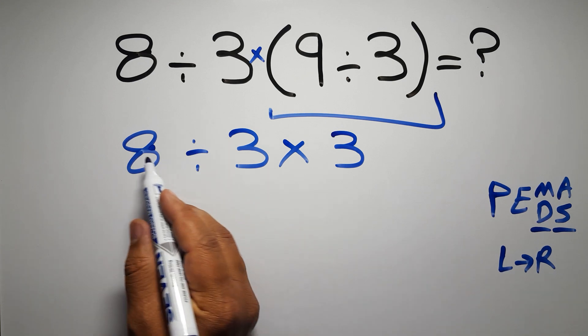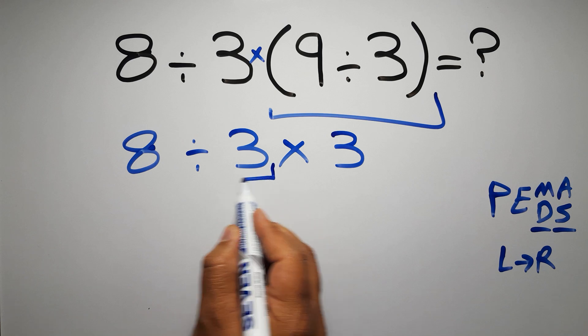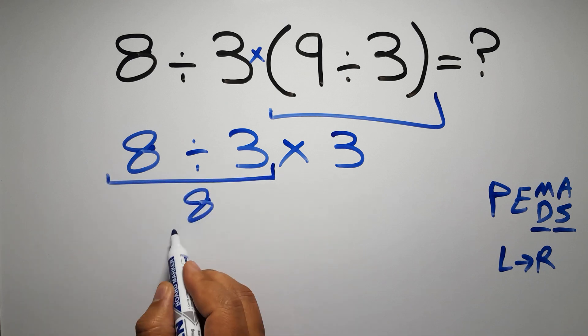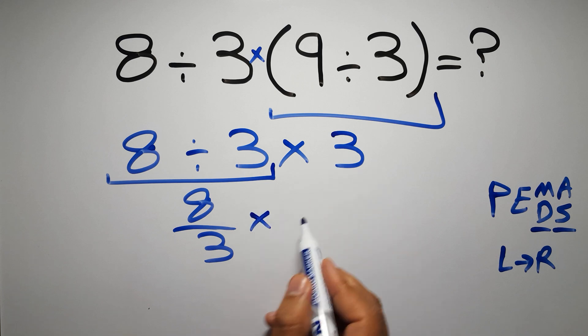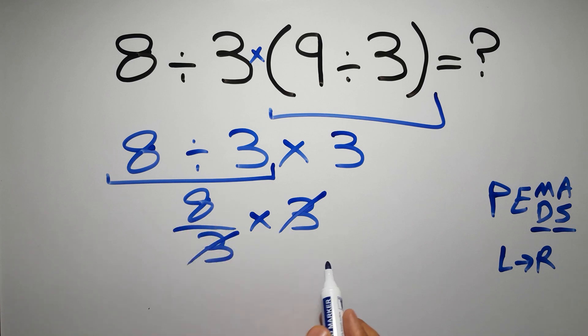8 divided by 3 can be written as 8 over 3. So 8 over 3 times 3. Now we can easily cancel this 3 and this 3, so here we have just 8.